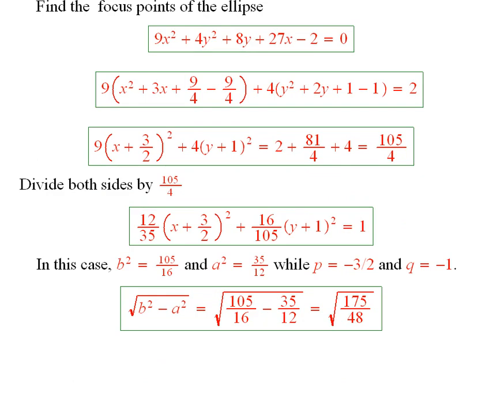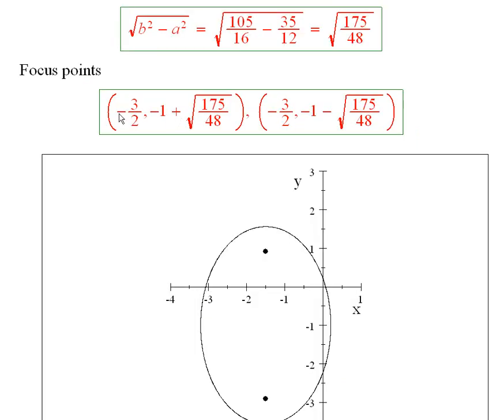So we can now determine what the focus points are. The focus points are minus 3 halves and this, and minus 3 halves and minus 1 minus this.